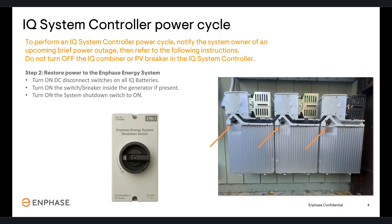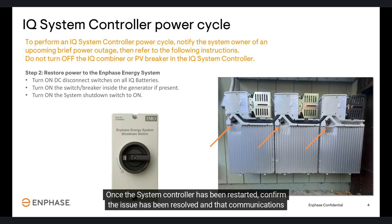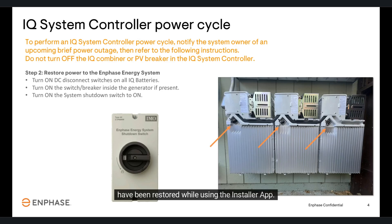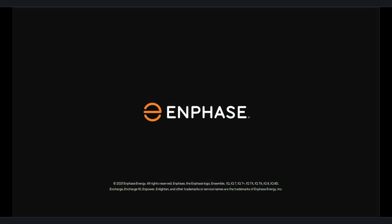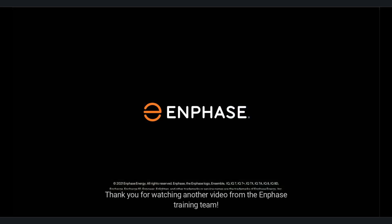The system exits shutdown only with the availability of PV or grid. Once the system controller has been restarted, confirm the issue has been resolved and that communications have been restored while using the installer app. If the issue persists, contact customer service for further troubleshooting steps. Thank you for watching another video from the Enphase training team.